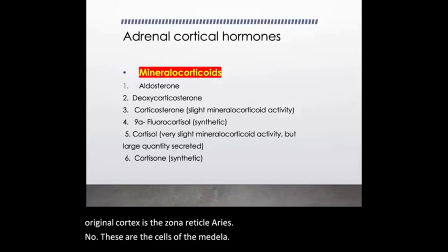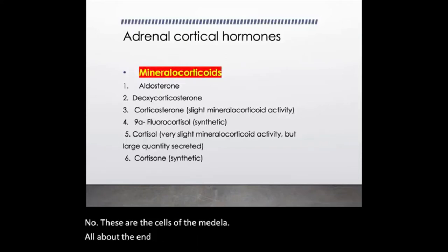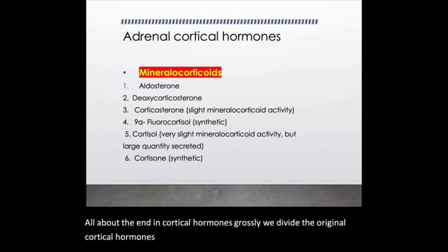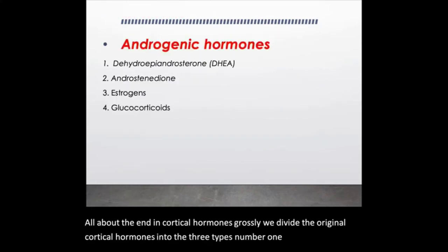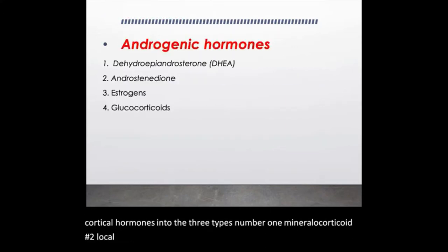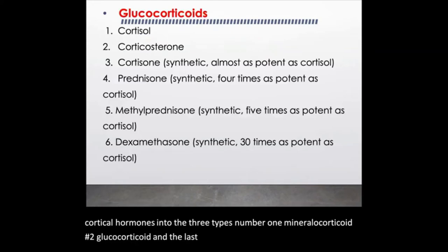How about the adrenocortical hormones? Grossly, we divide the adrenocortical hormones into three types: number one, mineralocorticoids; number two, glucocorticoids; and the last one is the androgenic hormones.